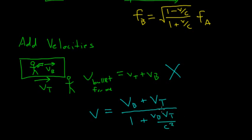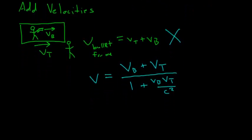Now, this is the term that is going to be different, and let's see what that does to our velocities. Well, let's say the train's moving at 90% the speed of light, so VT equals 0.9 times c. And let's say the bullet fires from the gun also at 90% the speed of light.